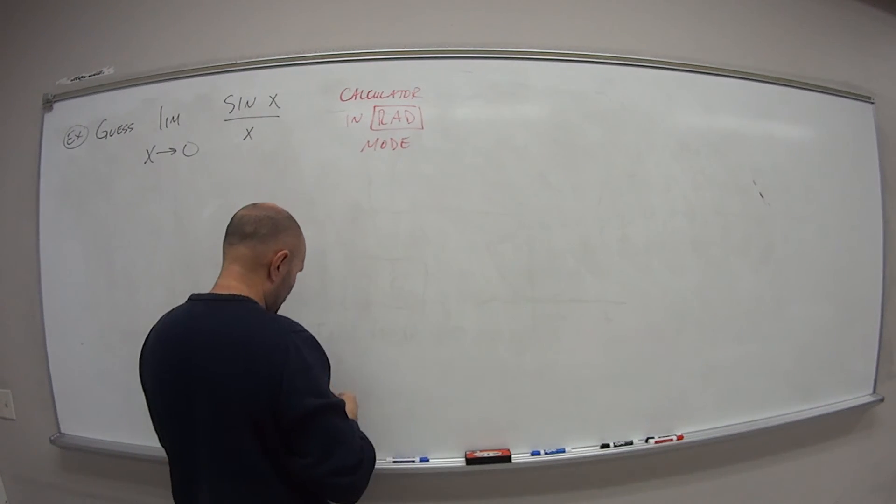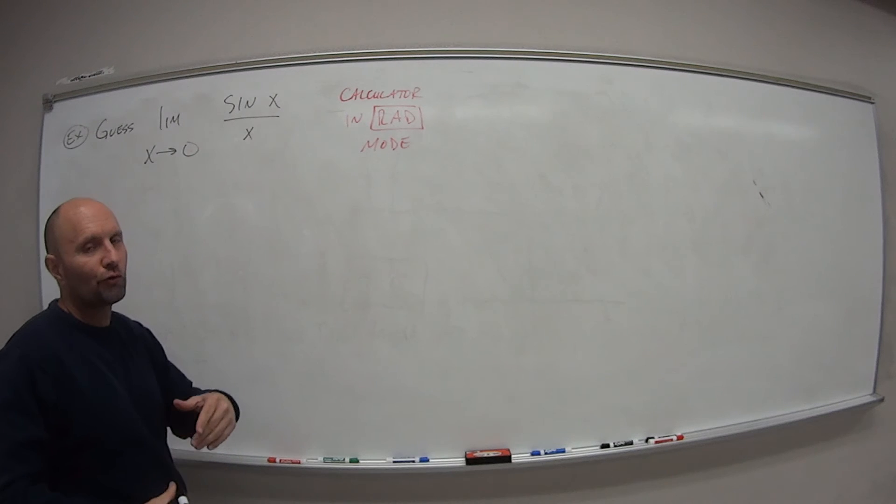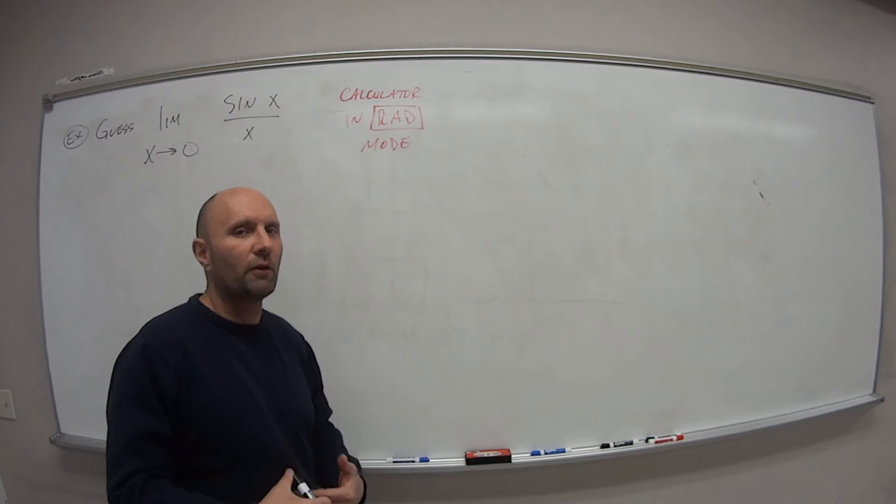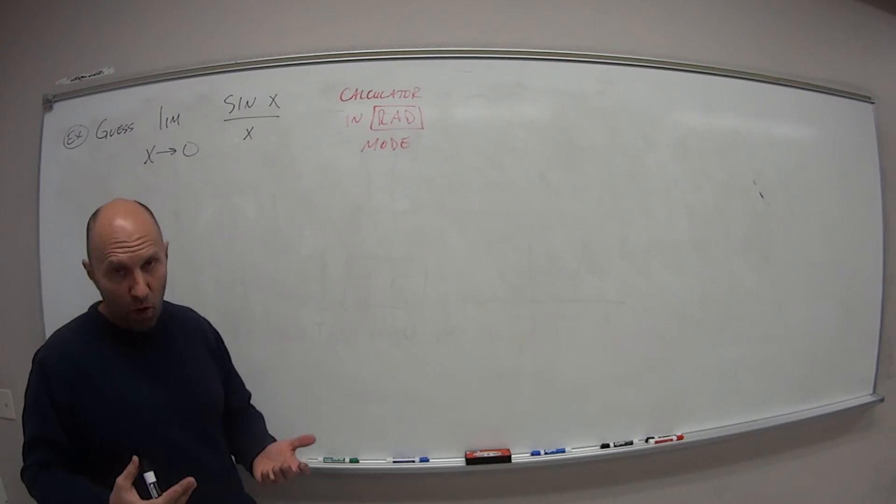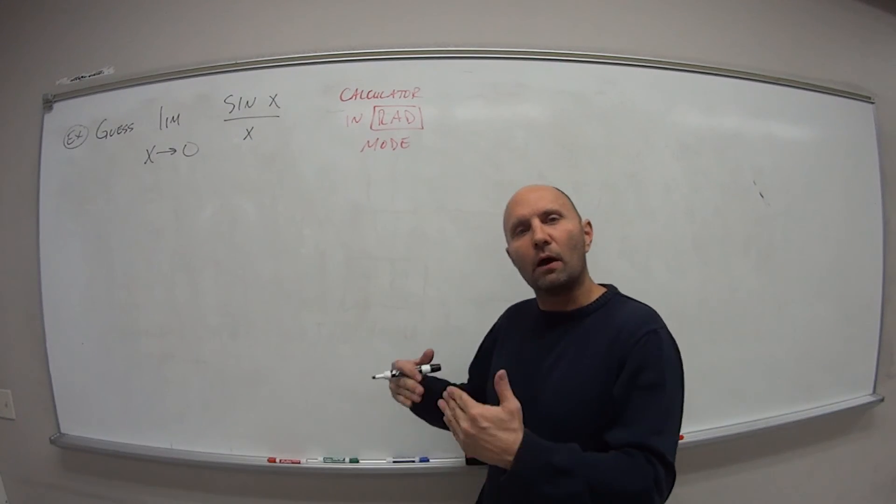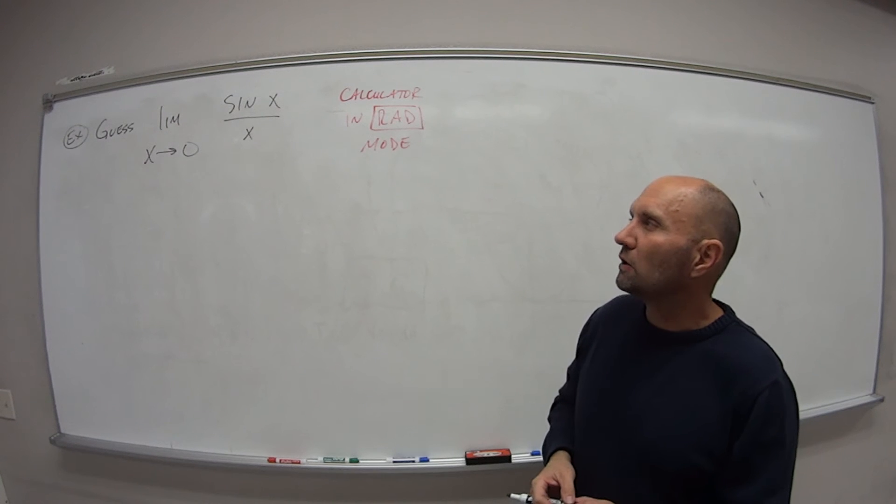So this is not degrees, we're not talking about x gets closer and closer to 0 degrees. We're talking about 0 gets closer and closer to 0 radians. So go ahead, if you need to, pause here. Try to work this out. See if you can figure out what value we're getting closer to.